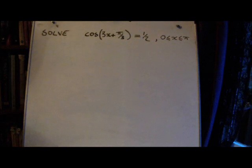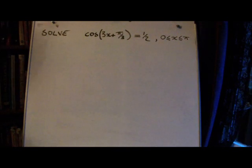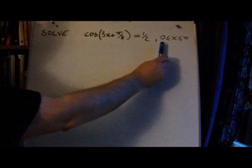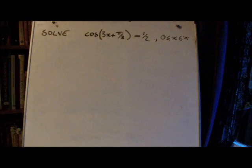This is an example of a trig equation which contains a more complex argument, which is that part. Instead of cos x, we've now got 3x plus π over 3. So we have to solve this equation in this interval. The interval is also telling us that the question is using radians, so make sure your calculator is in radian mode before you start.